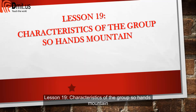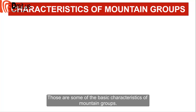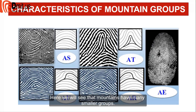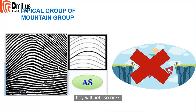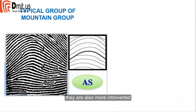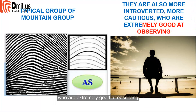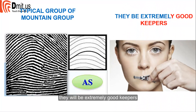Lesson 19: characteristics of the mountain group. These are some of the basic characteristics of mountain groups. Mountains have many smaller groups. The AS group — a typical pure mountain group — has stronger risk aversion factors. They are more introverted, more cautious, and are extremely good at observing. If you can find and share with the AS group, they will be extremely good keepers.